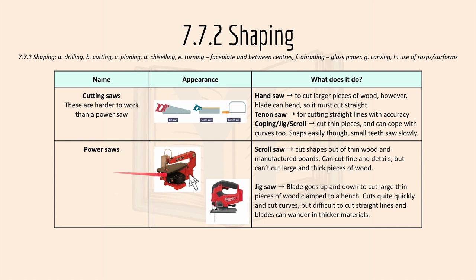For power saws, for example scroll saw and jigsaw: a scroll saw can be used to cut shapes out of thin wood and manufactured boards, and can cut fine detail, but can't cut large thick pieces of wood. A jigsaw blade goes up and down to cut large thin pieces of wood clamped to a bench. It cuts quite quickly and can cut curves, but it's difficult to cut straight lines and blades can wander in thicker materials.